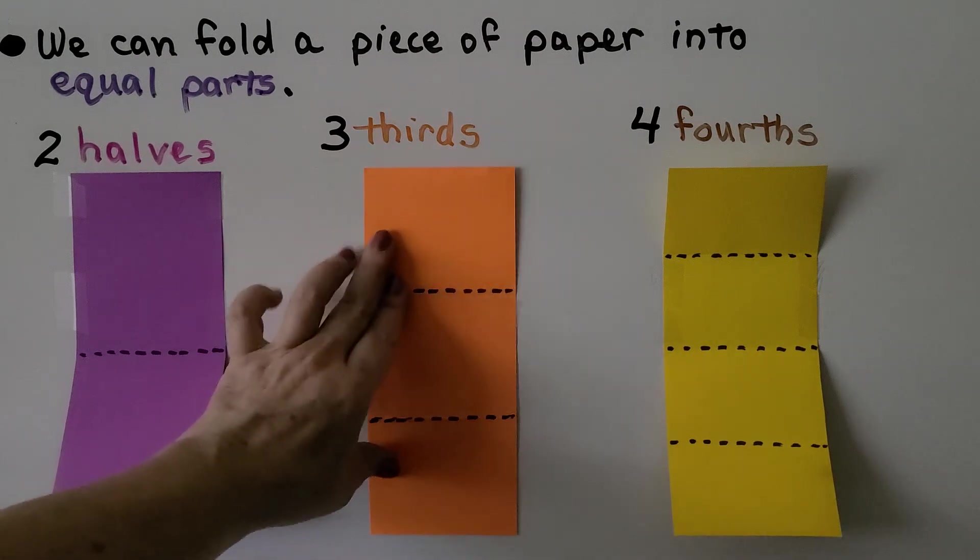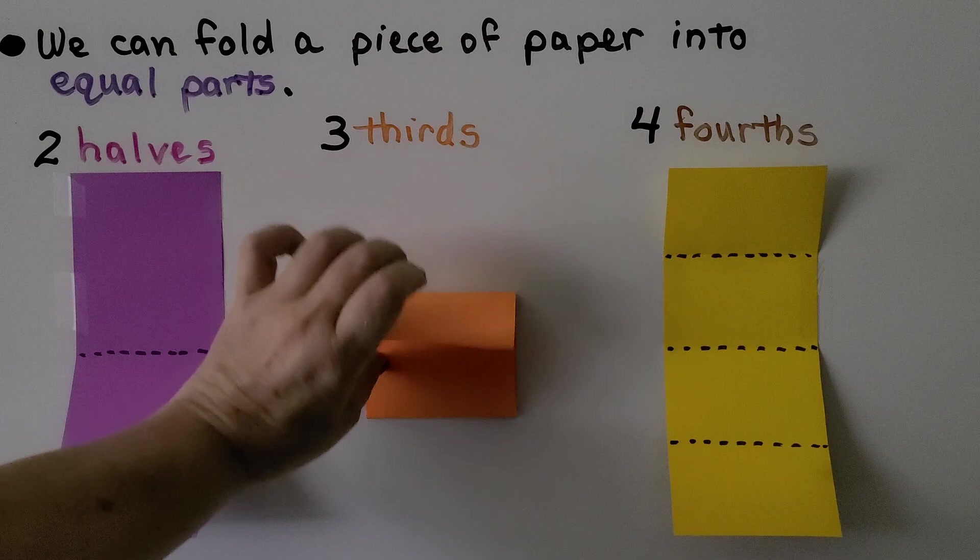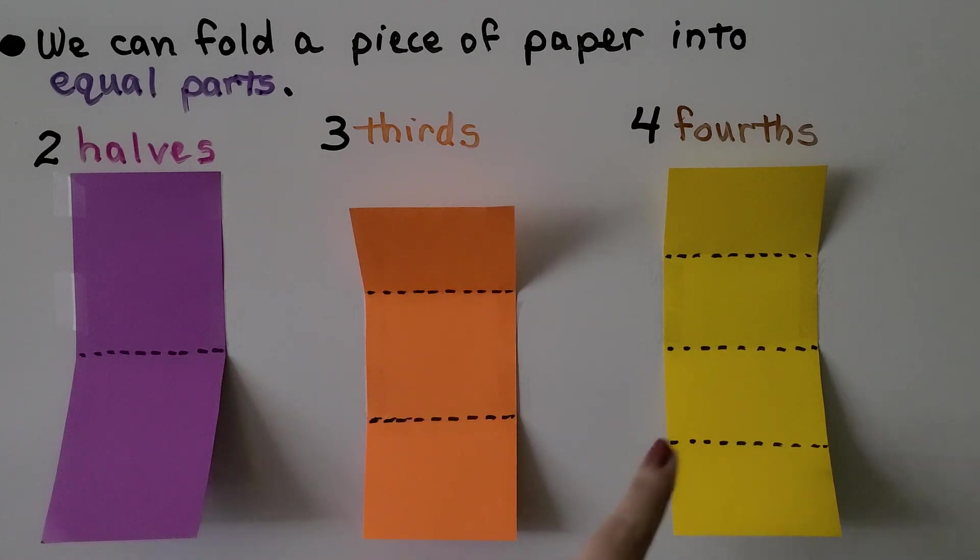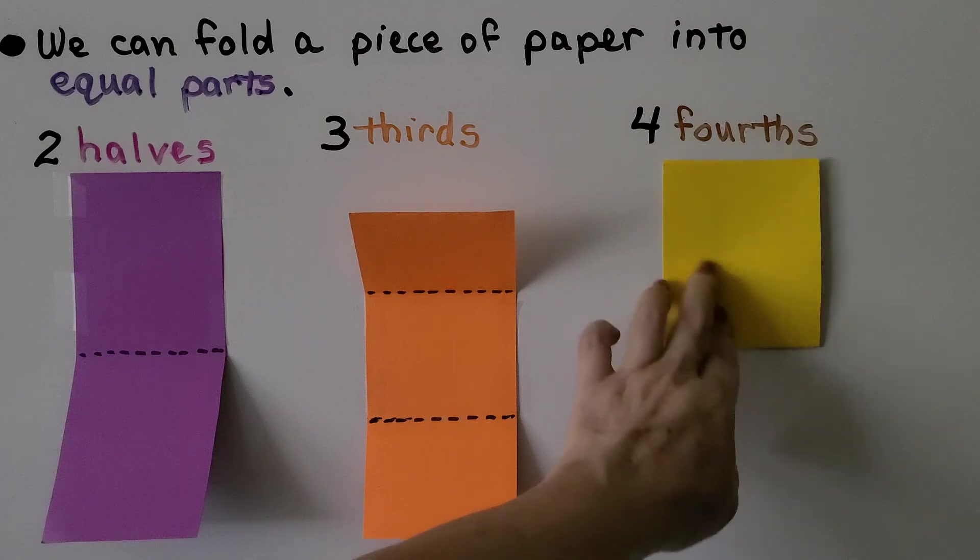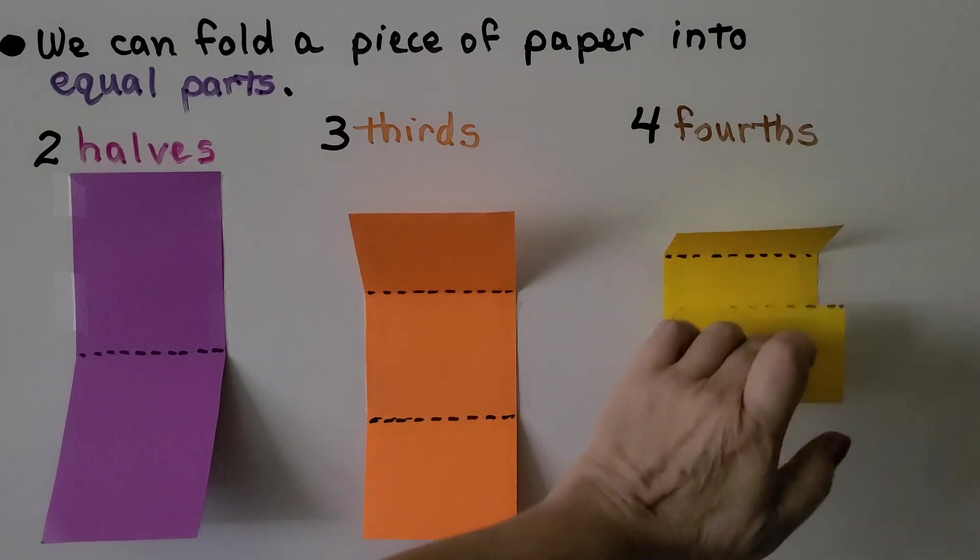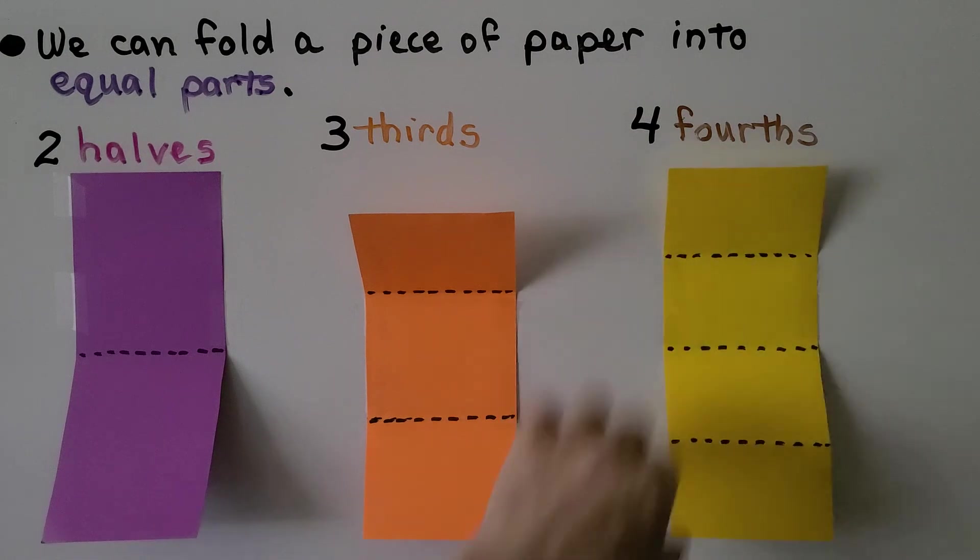For this one, I folded it into thirds like this. I made three equal parts. And for this one, I folded it into fourths. I folded it in half. Then I folded it in half again. And that made four equal parts.